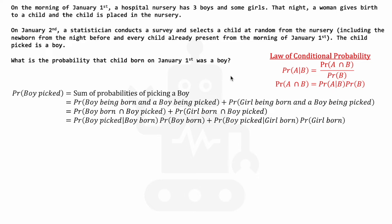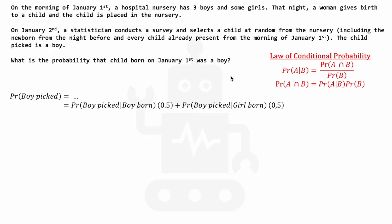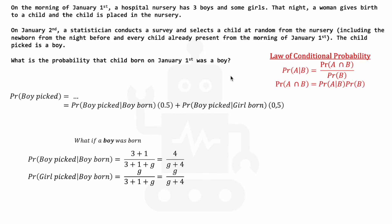Filling in the prior we already know — the probability of a boy being born is 0.5, equal to the probability of a girl being born. Now, what are these two conditional probabilities? Let's start with the condition: what if a boy was born? If a boy was born, the probability that we pick a boy would be, as a fraction, the total number of boys — 3 plus 1, because one boy was born — divided by 3 plus 1 plus g, the number of girls. We don't know the number of girls, but don't worry, it will wash out in the answer. This equals 4 over g plus 4.